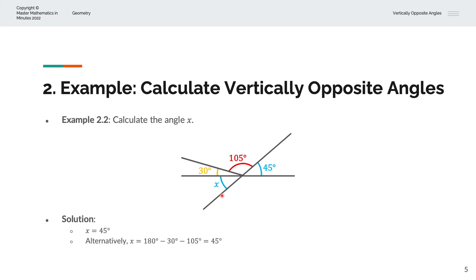So we have X, and the total angle on the straight line is 180 degrees, minus 30, which is that angle, minus 105, which is that angle. And that gives us 45 degrees, which matches the first approach.